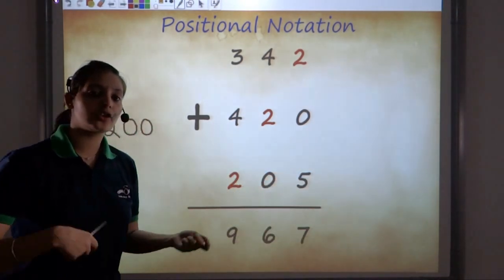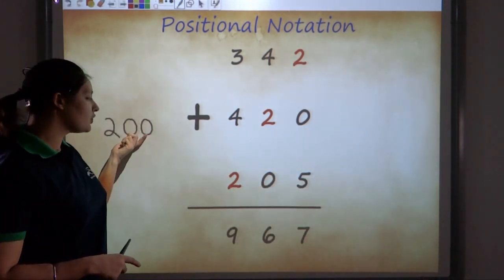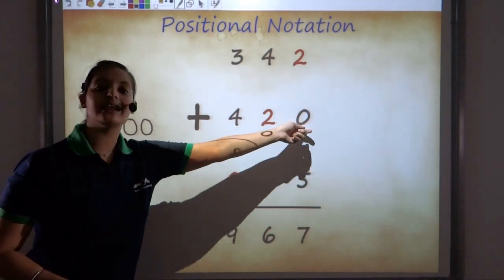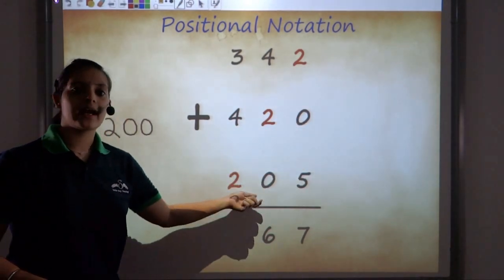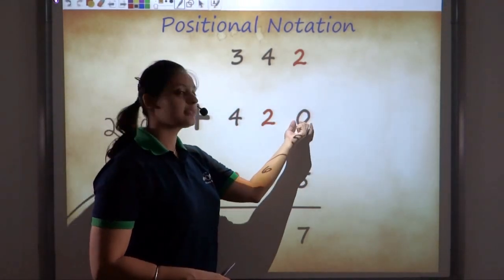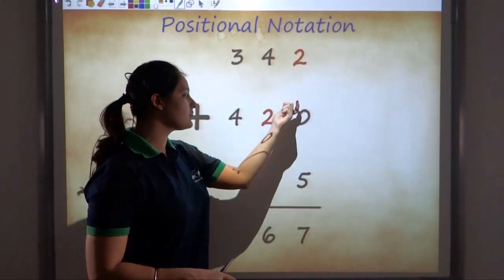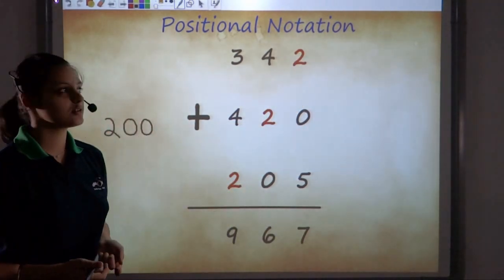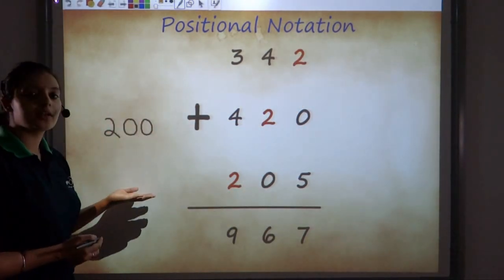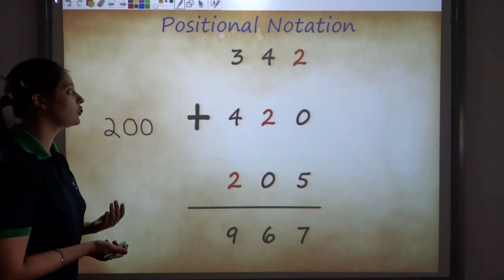We had seen how zero was included much later. Why was zero included much later? Because there was a need for zero that was felt as a symbol for columns that had no digits. So that's how our modern number system follows the positional notation.